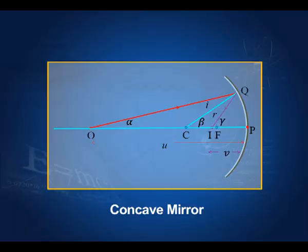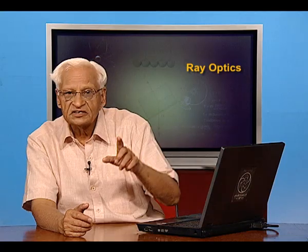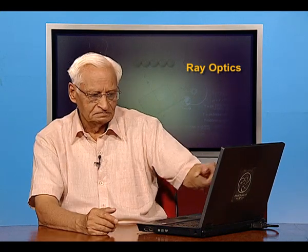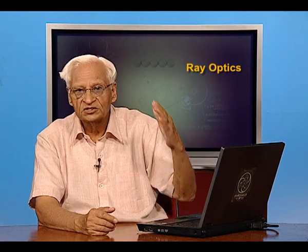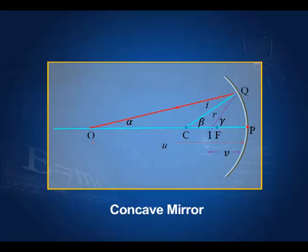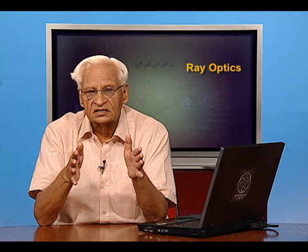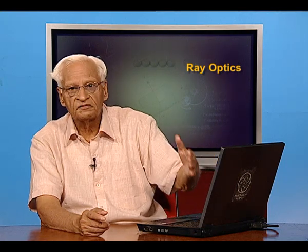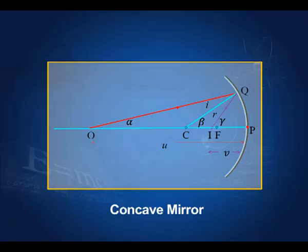Now let us see how images are formed by a concave mirror. Light can come from any side, but when we solve problems of reflection, we assume the light to come from the left. A ray comes from the object, strikes the mirror at Q, and gets reflected according to the laws of reflection. The laws of reflection are valid for all surfaces — even if the surface is spherical. So this ray OQ gets reflected to point I, meaning I is the image of O. We call angle PIQ as gamma, angle PCQ as beta, where C is the center of curvature, and angle POQ as alpha.